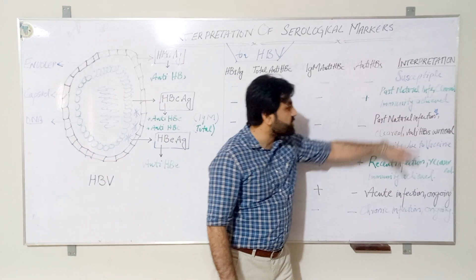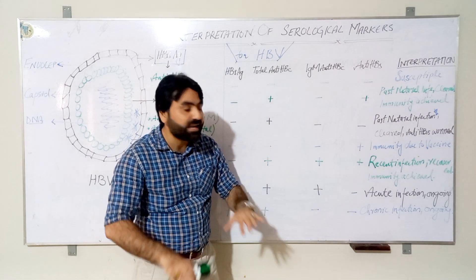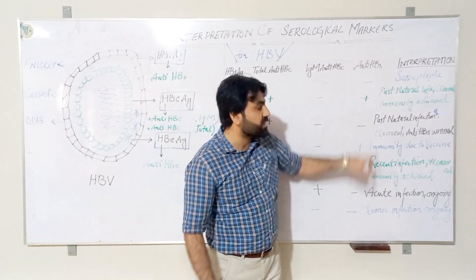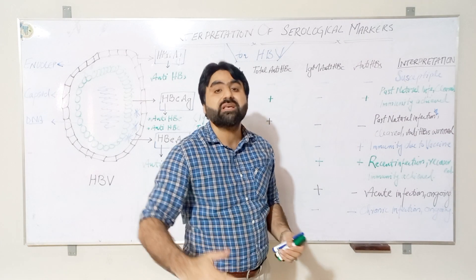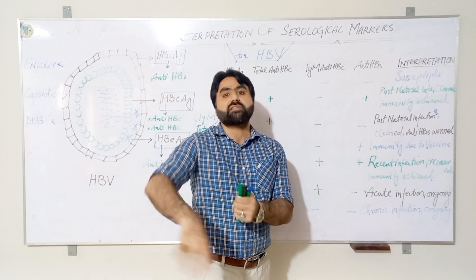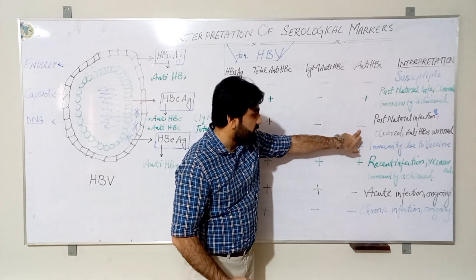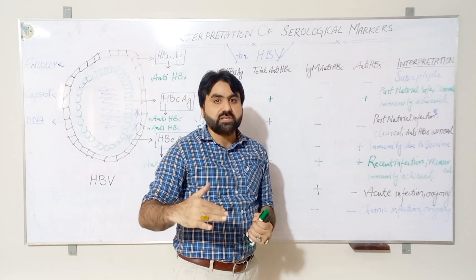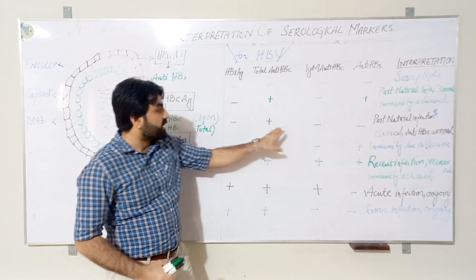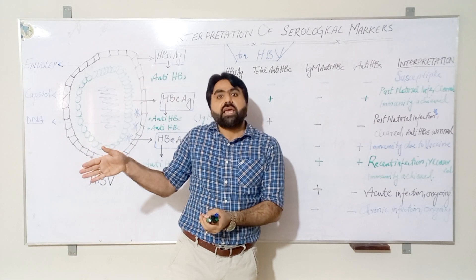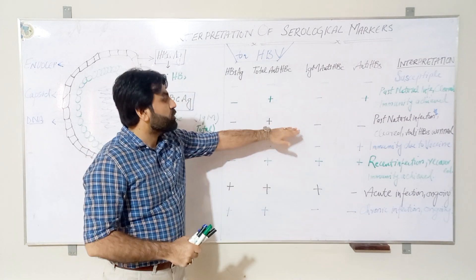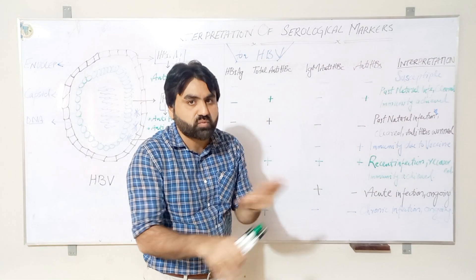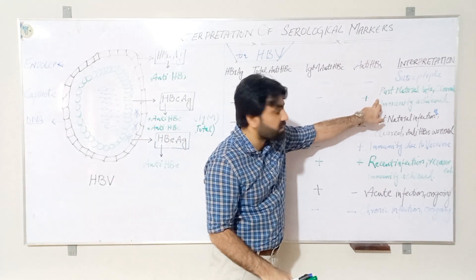Next, if HBsAg is negative, total anti-HBc is positive, IgM anti-HBc is negative, and anti-HBs is negative, this is also a past infection that has cleared, but immunity is not achieved because anti-HBs has waned over time. The person has resolved the previous acute infection but is not immune to subsequent infection.